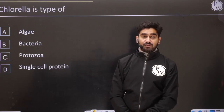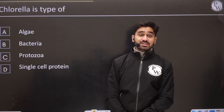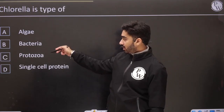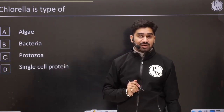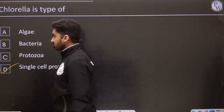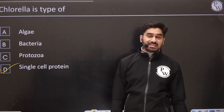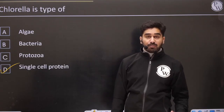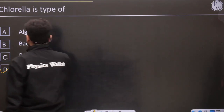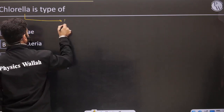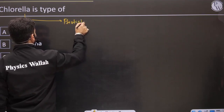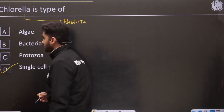Chlorella is a type of what? Options: algae, bacteria, protozoa, single-cell protein. Chlorella is a single-cell protein — very nutrient-rich. In the five-kingdom system, it falls under Protista. So none of the other options apply directly here.